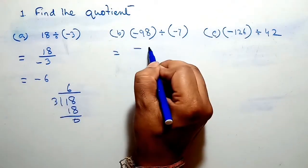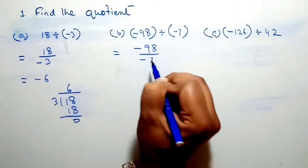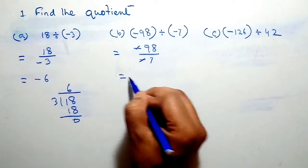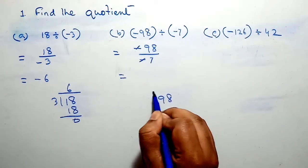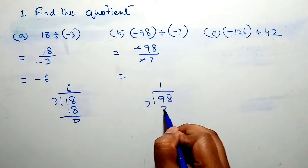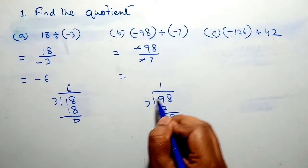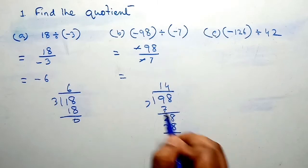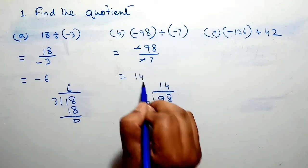Now question B: minus 98 divided by minus 7. Here this minus and this minus cancel. Finally we divide 98 by 7. 7 ones are 7, and bringing down 8 gives 28. Therefore our quotient is 14.